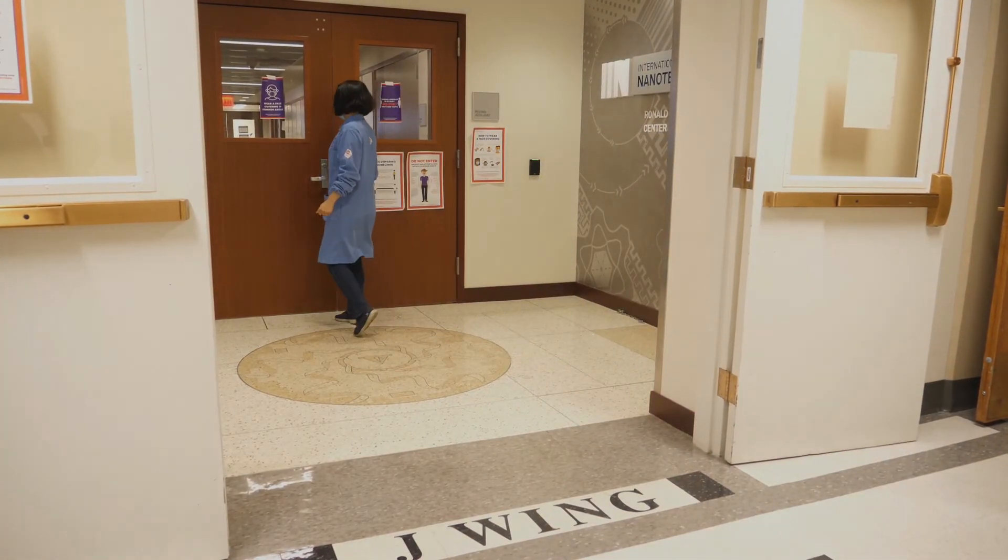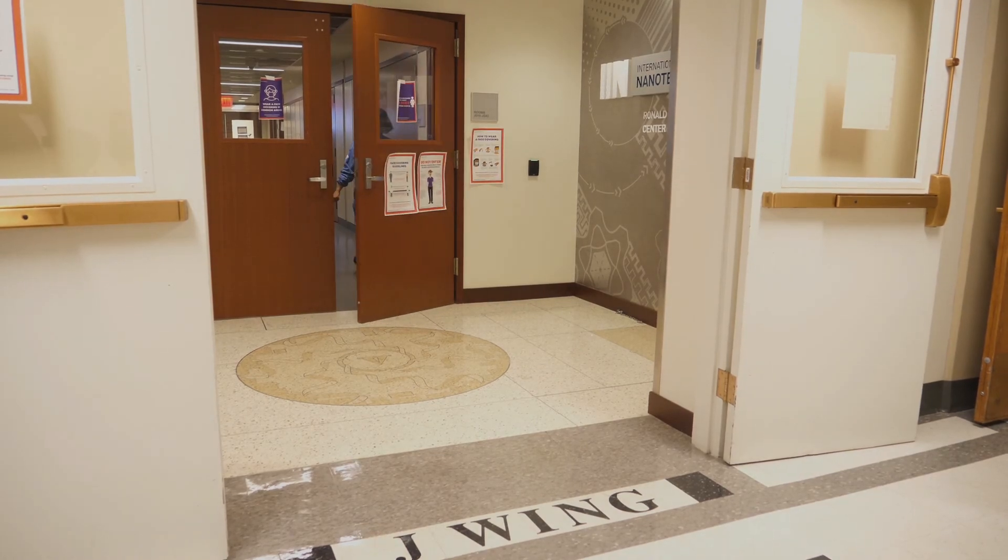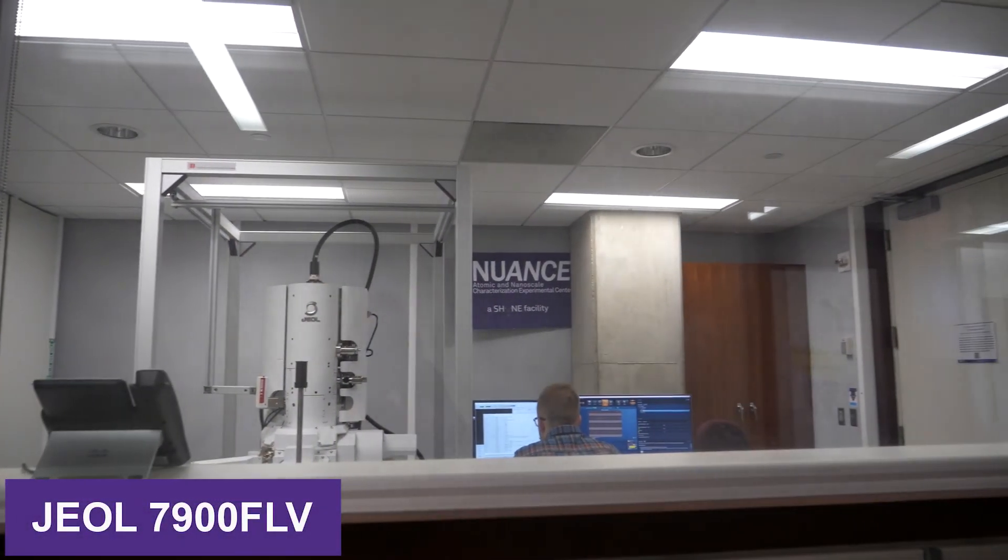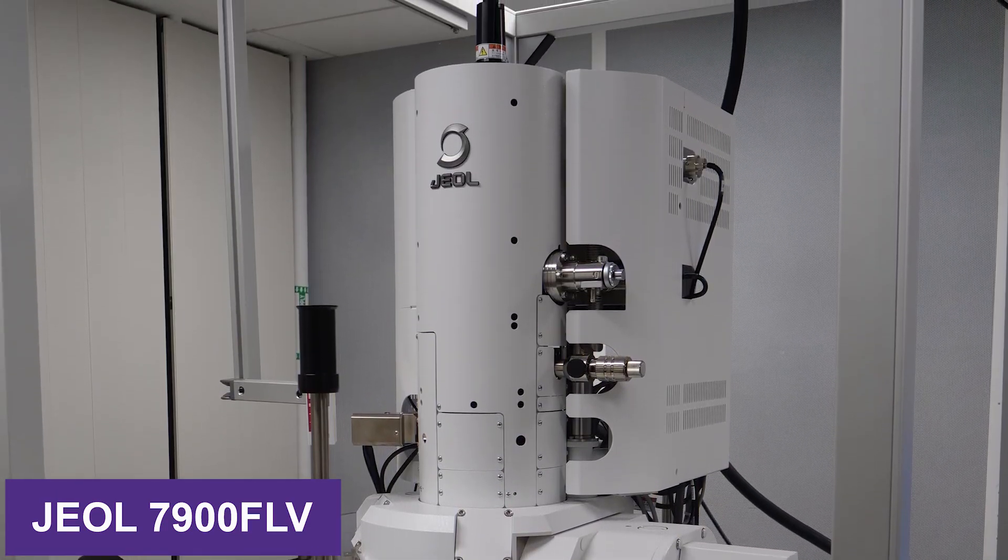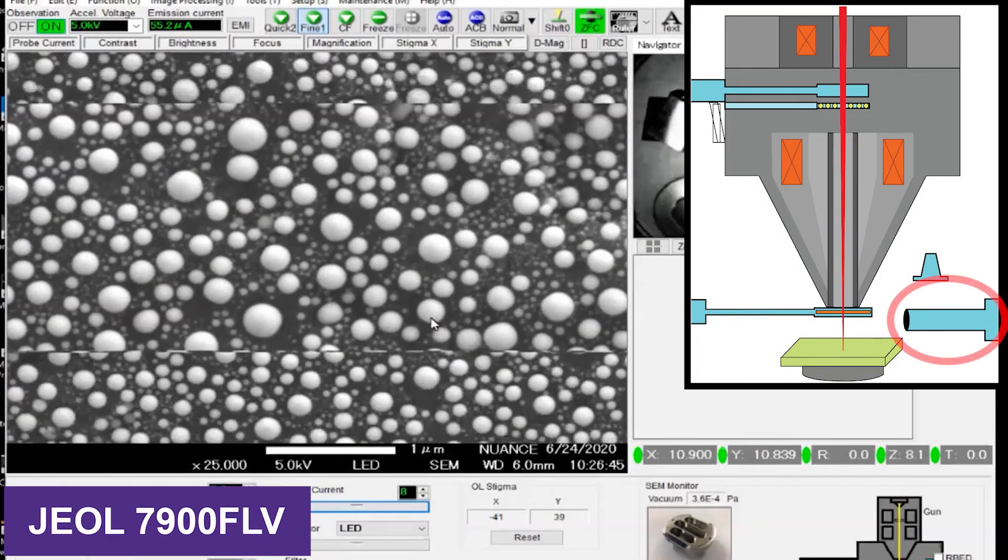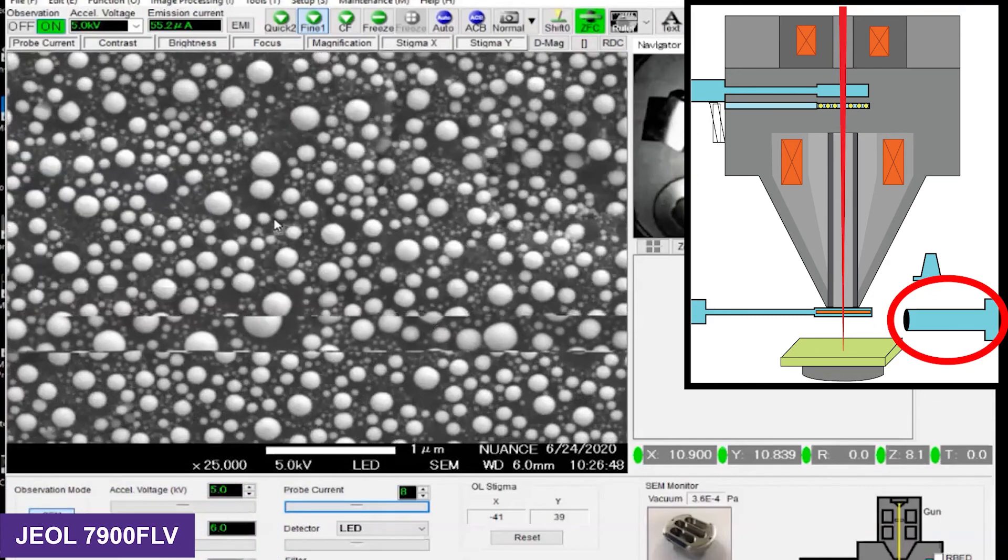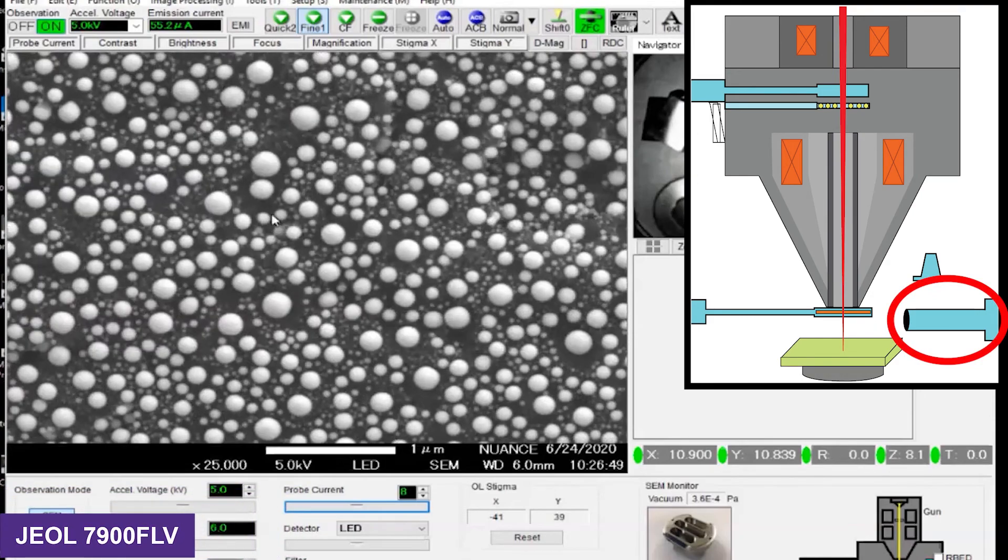The last SEM on this tour can be found on the ground floor of the J-Wing. This is the JEOL 7900FLV, the newest high-resolution microscope in the lab. Like all of the other SEMs, this also has a lower detector. This is great for highly topographic samples.